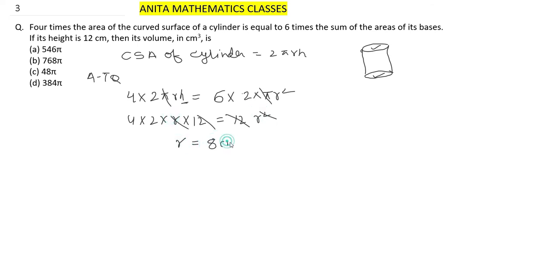R equals 8 cm. Volume of cylinder is πr²h, which equals π×8×8×12.